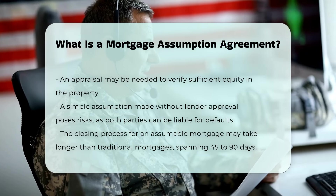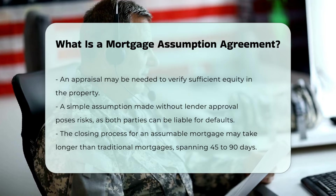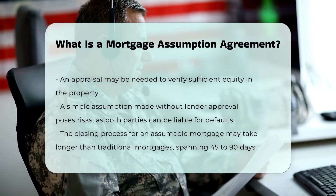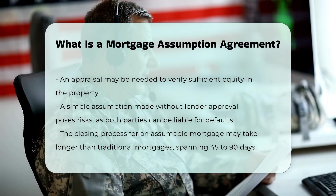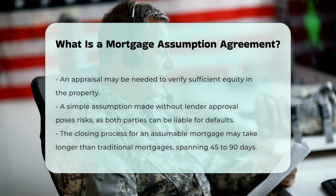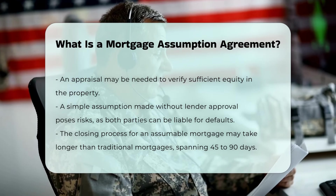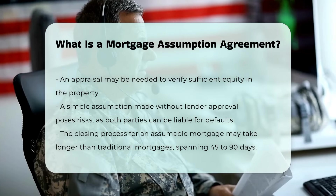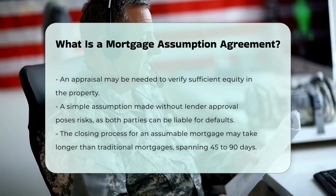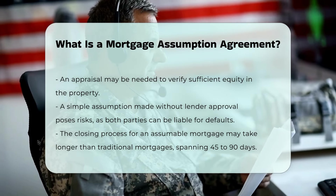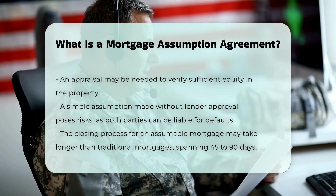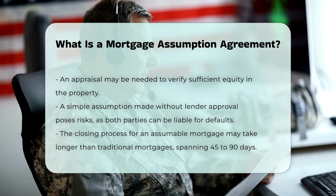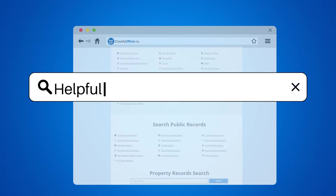Risks and Considerations: If the assumption is made without the lender's approval, it is considered a simple assumption and is riskier, as both the buyer and seller can be held liable for any defaults. The closing process for an assumable mortgage can take longer than a traditional mortgage, typically between 45 to 90 days, and involves signing a promissory note and paying any necessary closing costs and down payment.